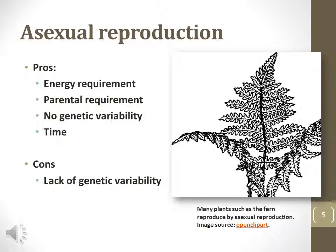There are several advantages of asexual reproduction versus sexual reproduction. Less energy is required to find and compete for a mate. Another parent does not have to be available, so no time must be spent finding a mate. Additionally, the lack of genetic variability in asexual reproduction reduces the chance of genetic mutations. The drawback of asexual reproduction, however, is that there is low overall genetic variability, because genetic diversity from separate parents cannot be blended in the offspring.